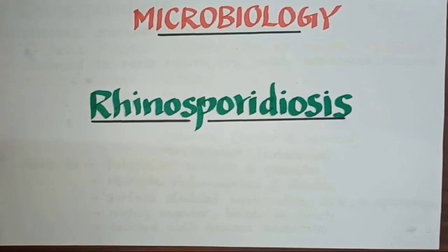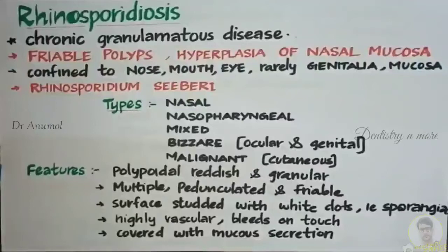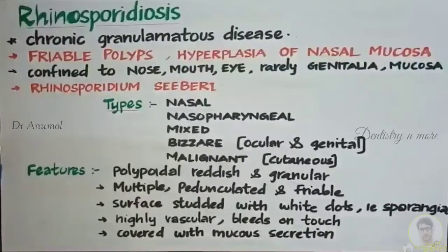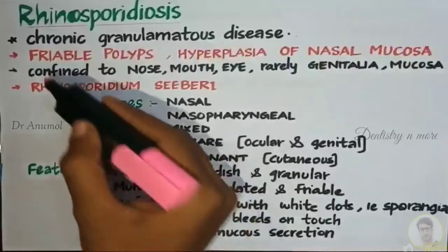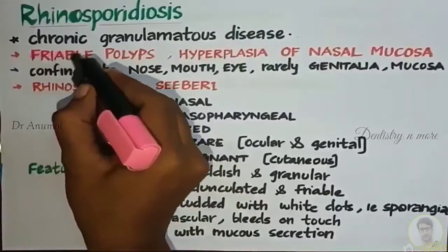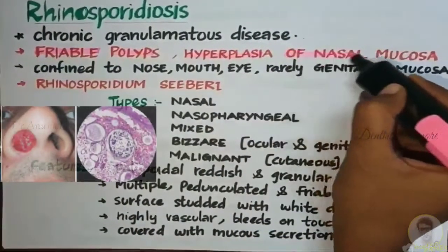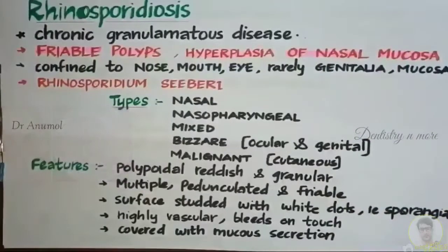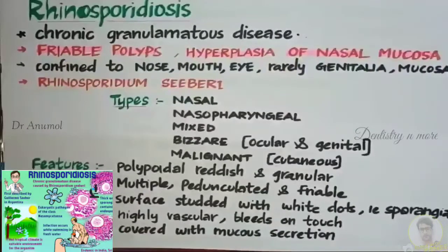Hello all, today we will be continuing with a short note series of Microbiology and we will be discussing Rhinosporidiasis. Rhinosporidiasis is a chronic granulomatous disease and the classic features are formation of friable polyps, hyperplasia of nasal mucosa. Usually the polyp formation is confined to nose, mouth, eye and rarely it will be infecting the genitalia and mucous membrane.